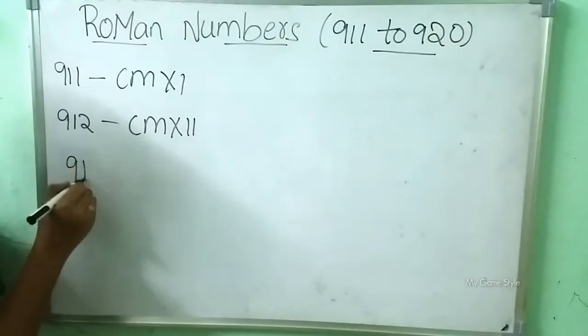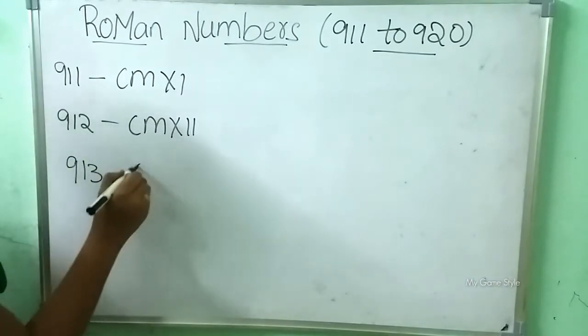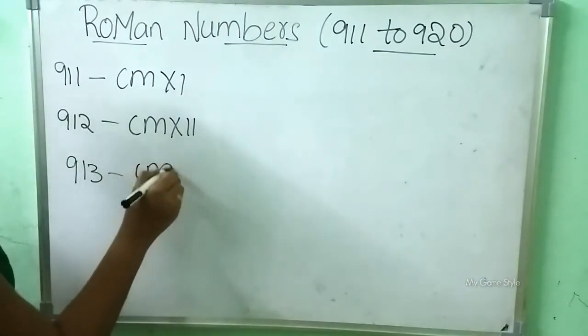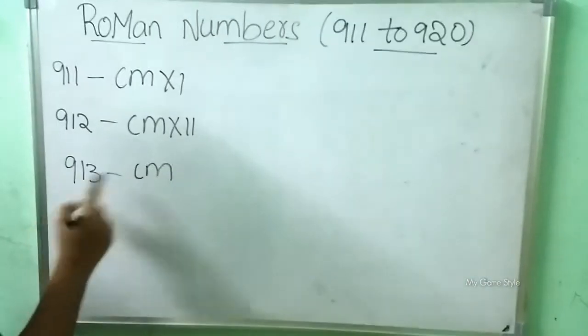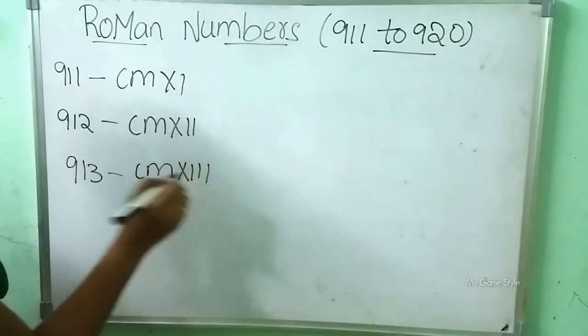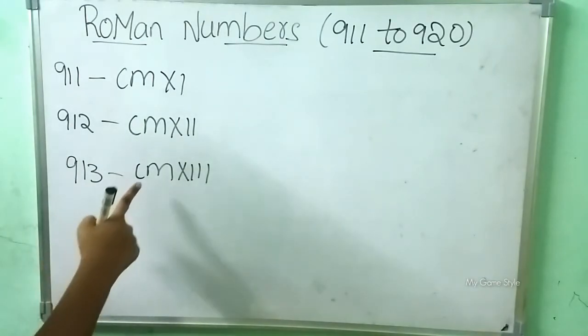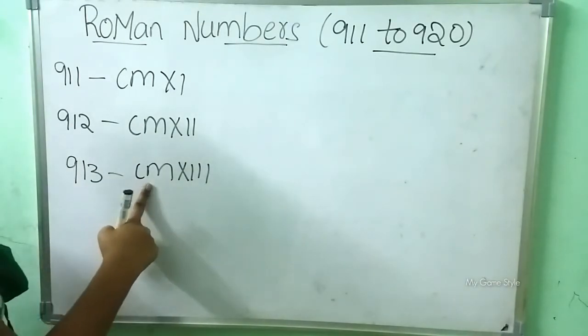After that, 913. Now how to write? CM is 900. XIII is 13. So this means 913, written as CMXIII.